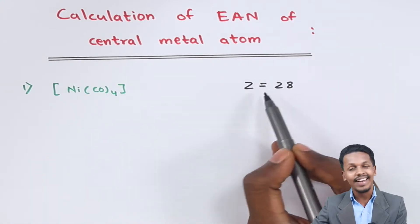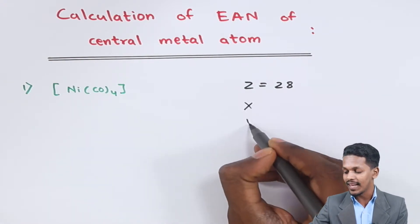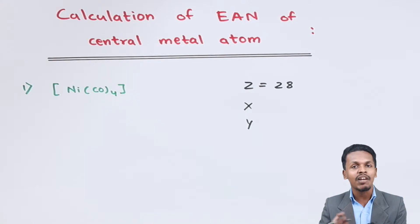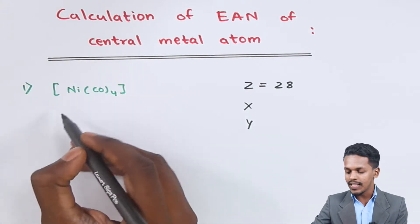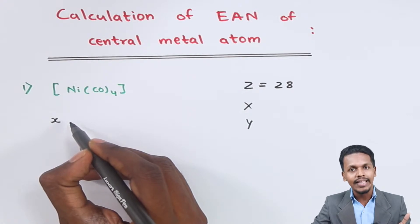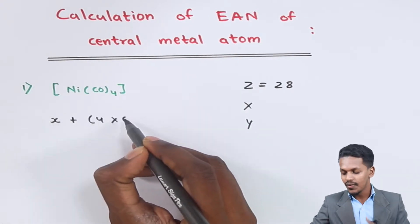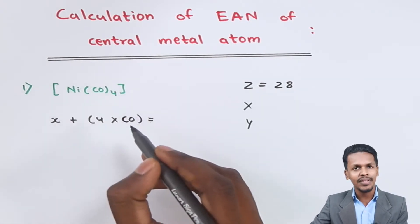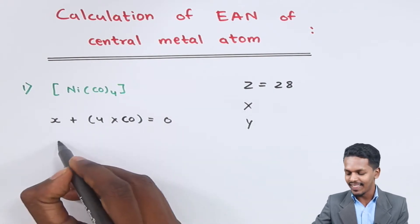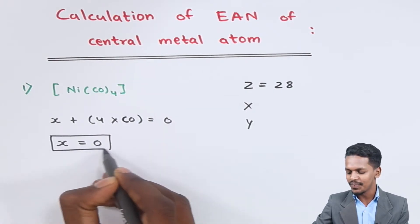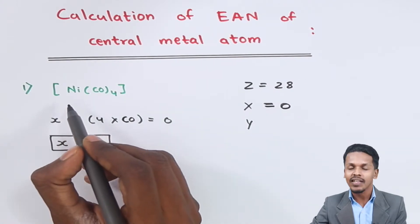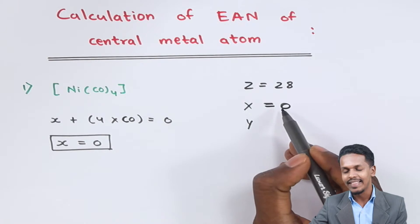We also need to calculate X and Y. X is the number of electrons lost by the metal atom during oxidation. Nickel is a transition metal with a variable oxidation state. Here the ligand present is four moles of carbon monoxide, and the overall charge on the complex is zero. Since CO is a neutral ligand, there is no charge on it, so the value of X is zero — nickel does not undergo any oxidation in this case.